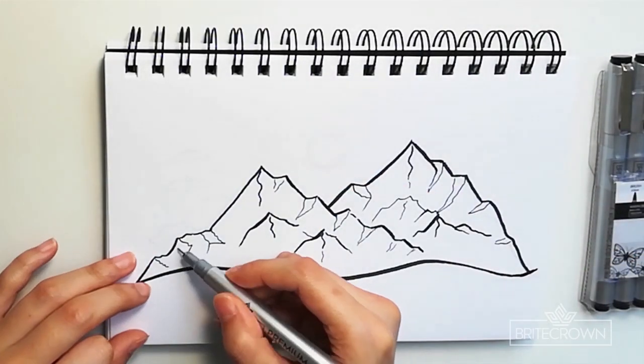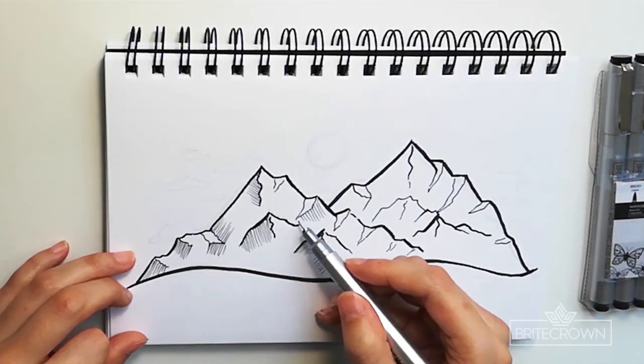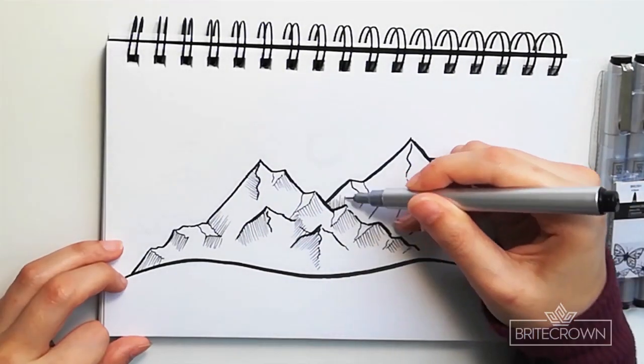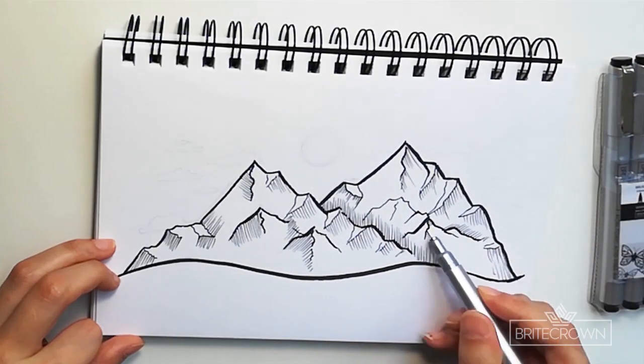And then using a more thin nib that was size 2, I created some shading effects using lines to begin my cross hatching shadows.